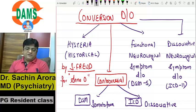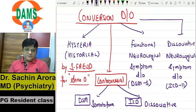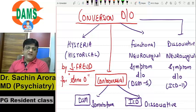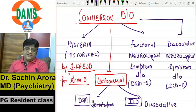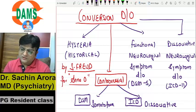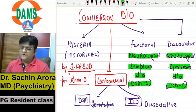Even the latest ICD-11 — I was going through it for the first time while preparing to teach you. I expected ICD-11 might have merged this controversy of classification, but they are still maintaining it as dissociative. They have named it Dissociative Neurological Symptom Disorder, which I found interesting — it is in synchrony with DSM-5, only one word is different.